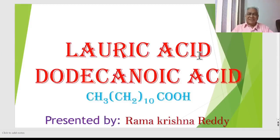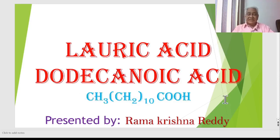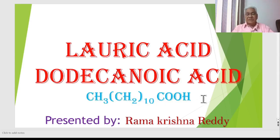Lauric Acid is also known as Dodecanoic Acid. 'Deca' means 10 and 'do' means 2, so Dodecanoic Acid means it contains 12 carbons. Lauric Acid contains 12 carbons and it is a saturated fatty acid. Its empirical formula is CH3, followed by CH2 ten times, and then COOH.